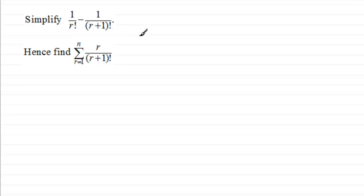What we've got here is to simplify 1 over r factorial minus 1 over (r+1) factorial, and then hence find the sum of Sigma, in other words for r going from 1 to n of r all over (r+1) factorial. So if you'd like to give this a go, just pause the video, come back when ready, and you can check your solution and methods with mine.